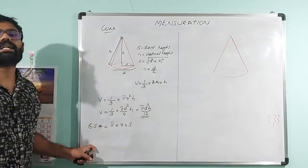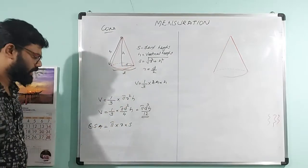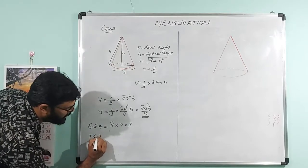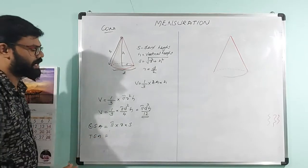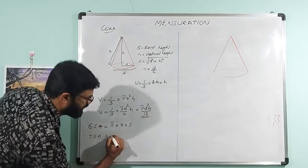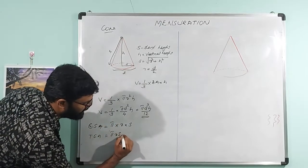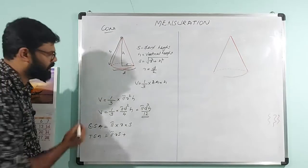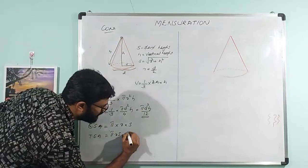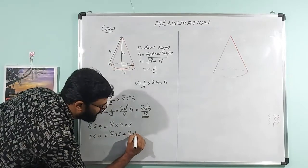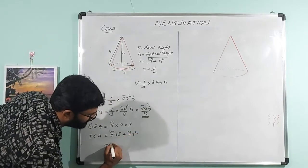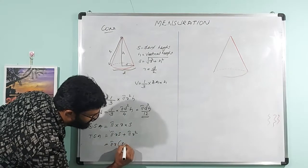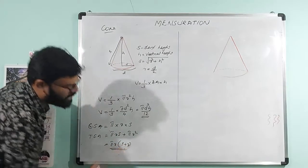What is the total surface area? Total surface area equals curved surface area plus base area. The base shape is circular, so total surface area is π r s + π r², which gives π r (s + r).